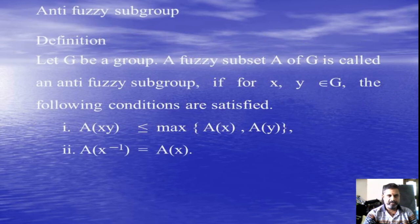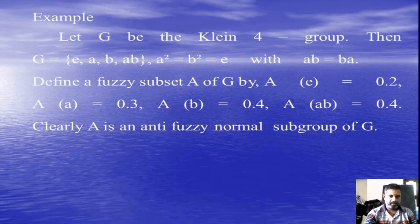This is an example of a Fuzzy Subgroup. And next, Anti-Fuzzy Group. Anti-Fuzzy Group, the definition changes A(x*y) is less than or equal to max{A(x), A(y)}. This one property only changed from Fuzzy Group. This is an example of an Anti-Fuzzy Group. The same example, membership values only we changed.